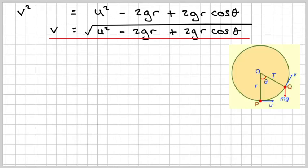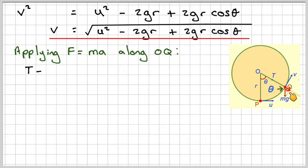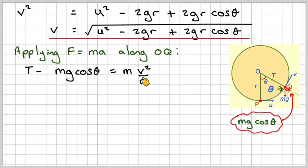Going back to our diagram, we now need to find this tension here. We're going to resolve along this line here, OQ. Going towards the centre of the circle, we have T. And here, we have this component of the weight acting down this way here. This angle here will be theta. Therefore, this component here will be M G cos theta. So, we need to take away M G cos theta. It's a bit strange resolving that way, but that's the way we do it.